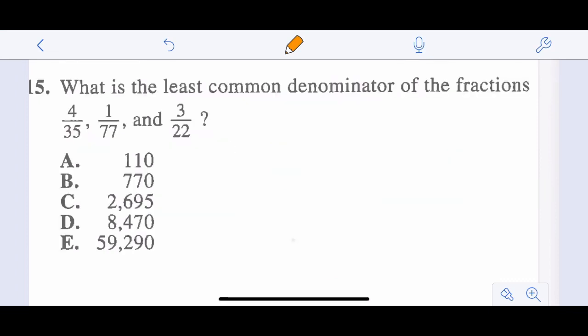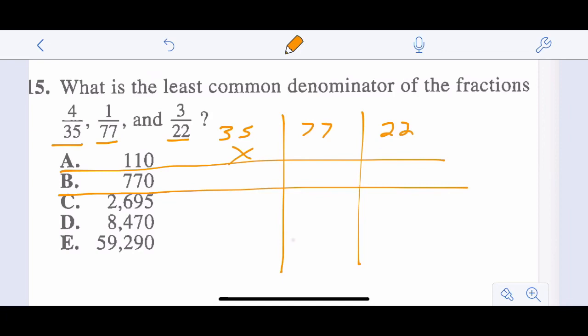What is the least common denominator of these fractions? 4 over 35, 1 over 77, 3 over 22. So I'm just going to do three columns. 35, 77, 22. And since I have a calculator, I'm just going to see if I get a whole number for each one. Let's go 770 divided by 35. Does that give me a whole number? Yes, it does. 770 divided by 77, does that give me a whole number? Yes, it does. 770 divided by 22, that also gives me a whole number. So I know that's the smallest number, least common denominator. All three of them will go into that one term. So my answer is B.